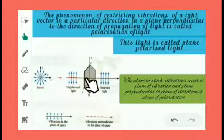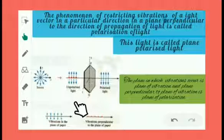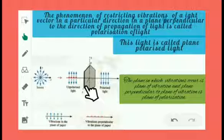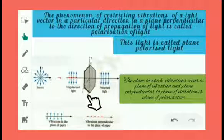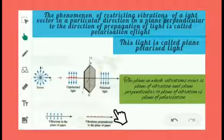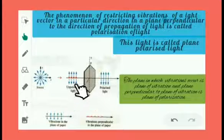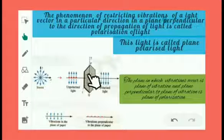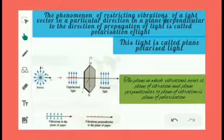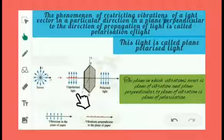Suppose the pass axis is along the x-z direction. Then the vibrations in the x-z plane will be transmitted and the vibrations in the x-y plane get absorbed. Whatever light comes from the tourmaline crystal — that is, the polaroid — will be dotted (perpendicular to the plane). When the pass axis is along the y-axis, the vibrations are parallel to the plane of the paper. The tourmaline crystal acts like a polaroid and polarizes unpolarized light.